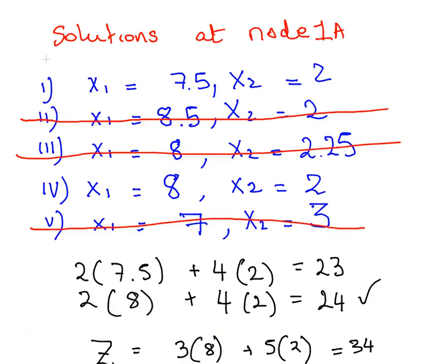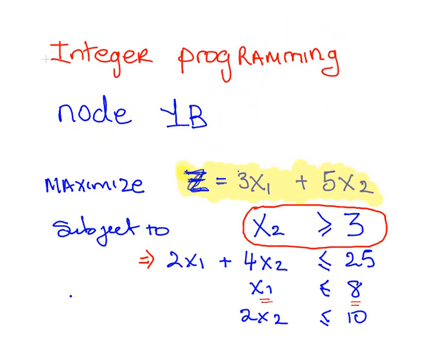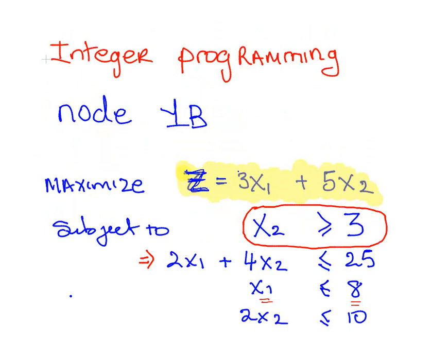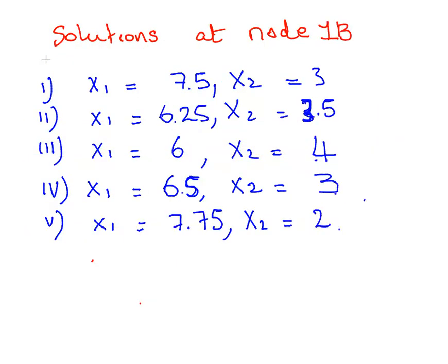The restrictions for node 1B are as follows: x2 is greater than or equal to 3 and x1 is less than or equal to 8. Also, watch out that 2x2 is less than or equal to 10, in other words x2 is less than or equal to 5. So x1 has to be less than or equal to 8 and x2 has to be between 3 and 5 to start us off.